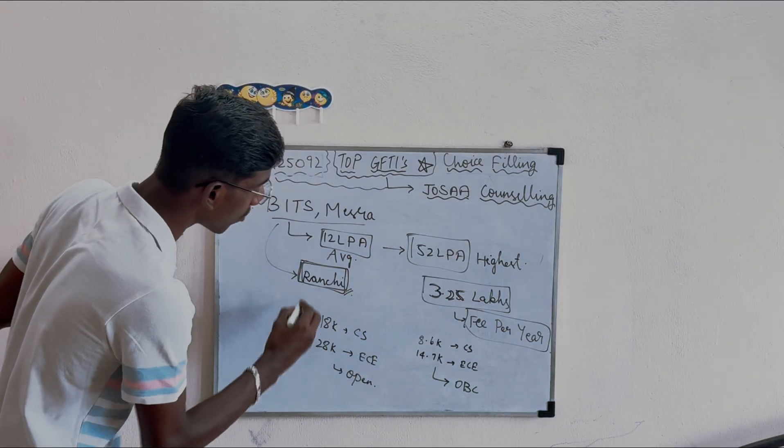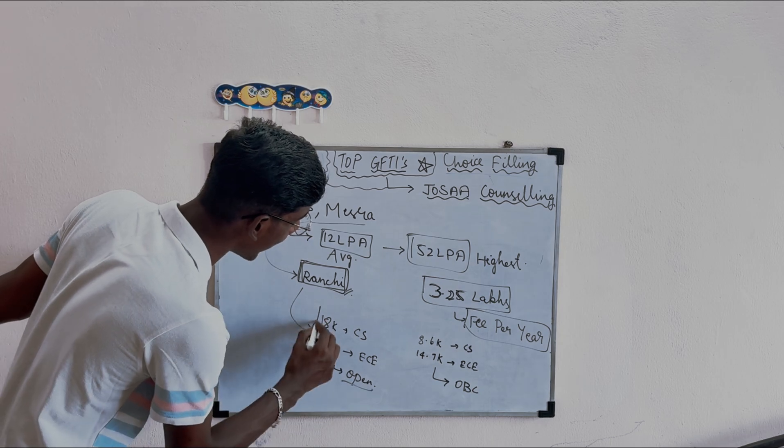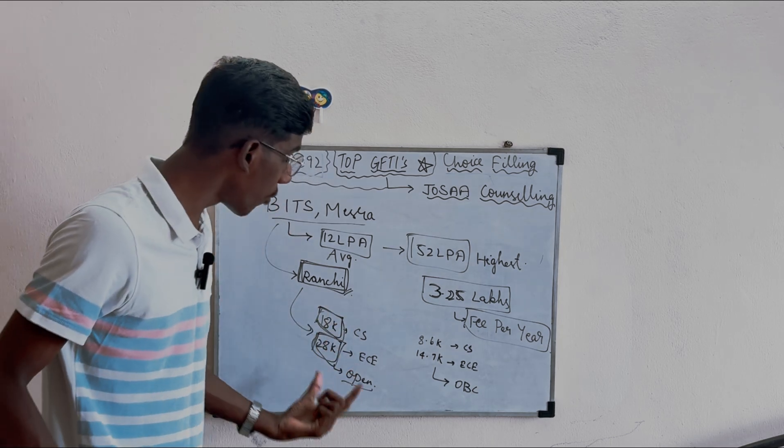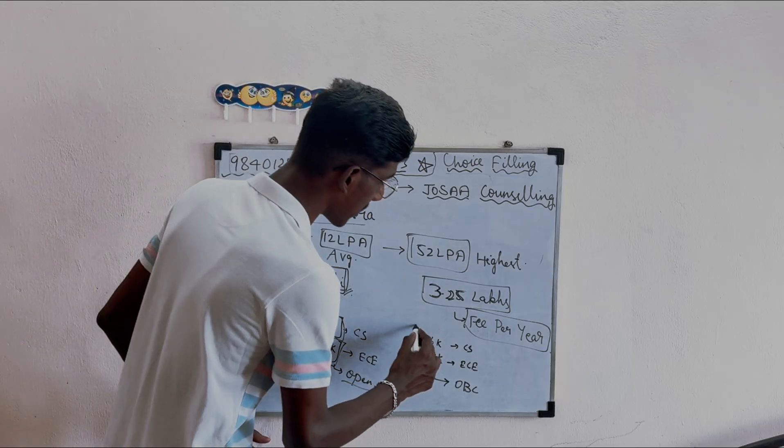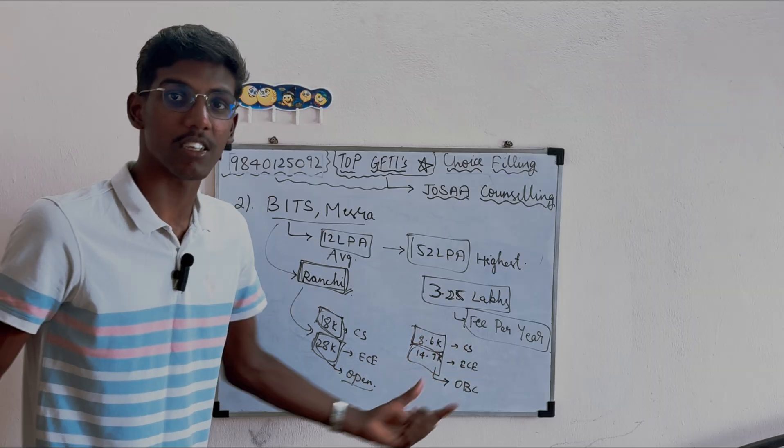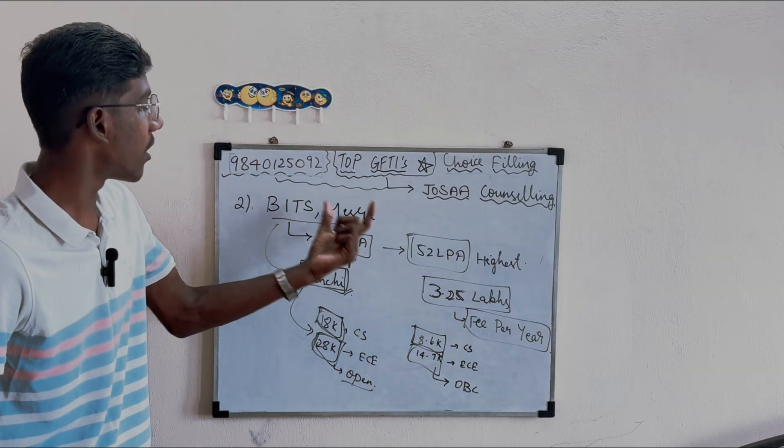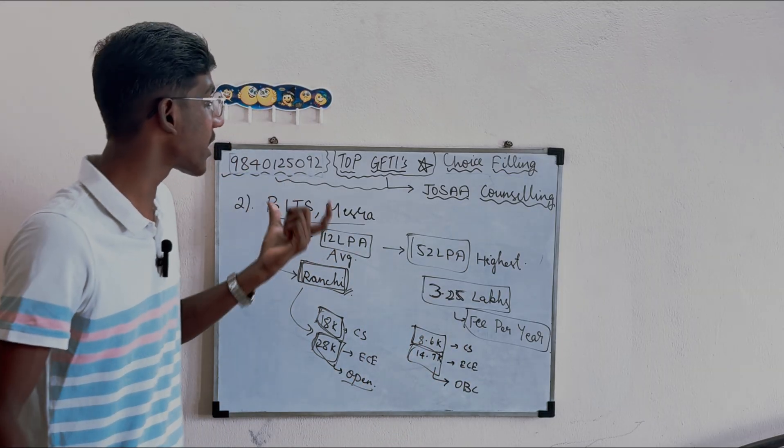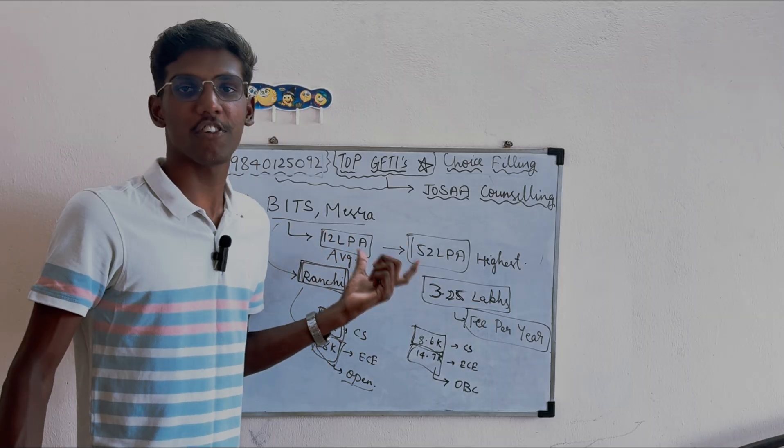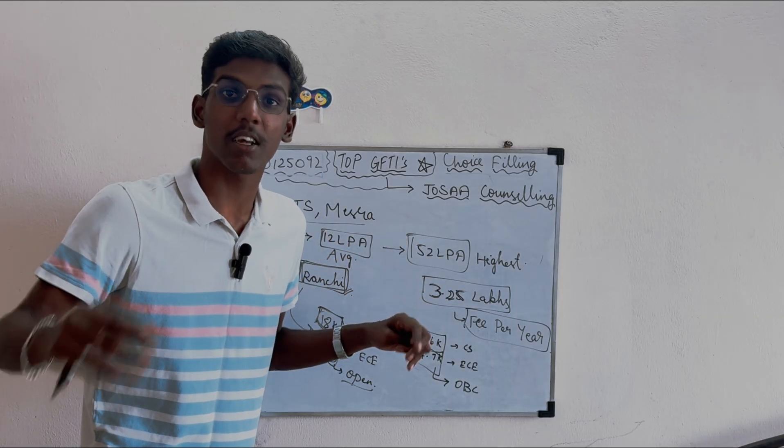Last round cutoff for open category: 18k for CS, 28k for ECE. OBC category rank: 8.6k for CS and 14.7k for ECE. This is BITS Mesra, the second top GFTI with 12 LPA average and 52 LPA highest.